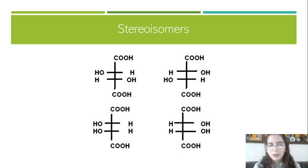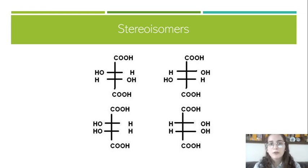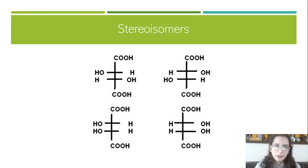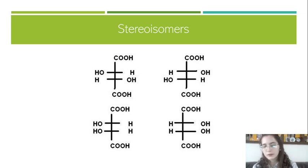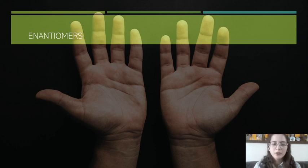Here we have another example. We can see that in the first molecule, on the left side, we have one hydroxyl group and one hydrogen. In the second one, we have one hydrogen and then one hydroxyl group. In the third one, we have two hydroxyl groups, and in the fourth we have two hydrogens. Stereoisomers are divided into enantiomers and diastereoisomers.